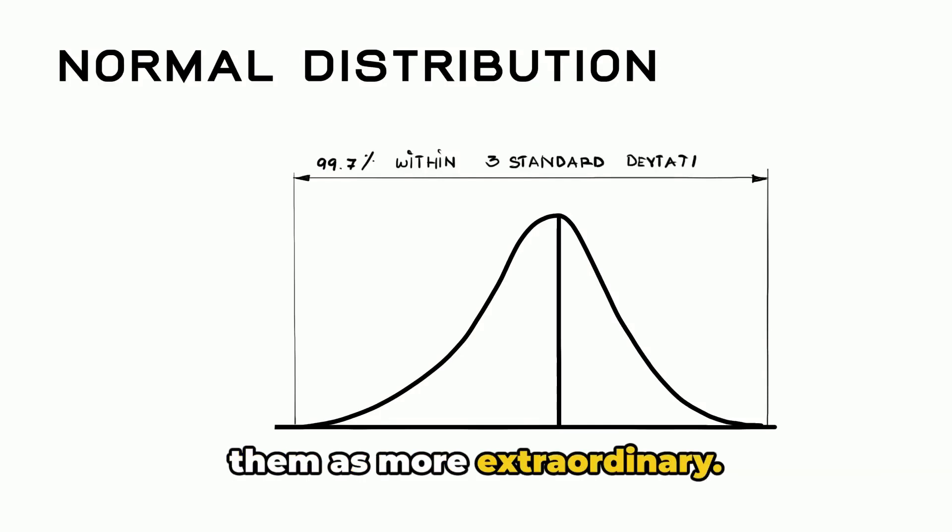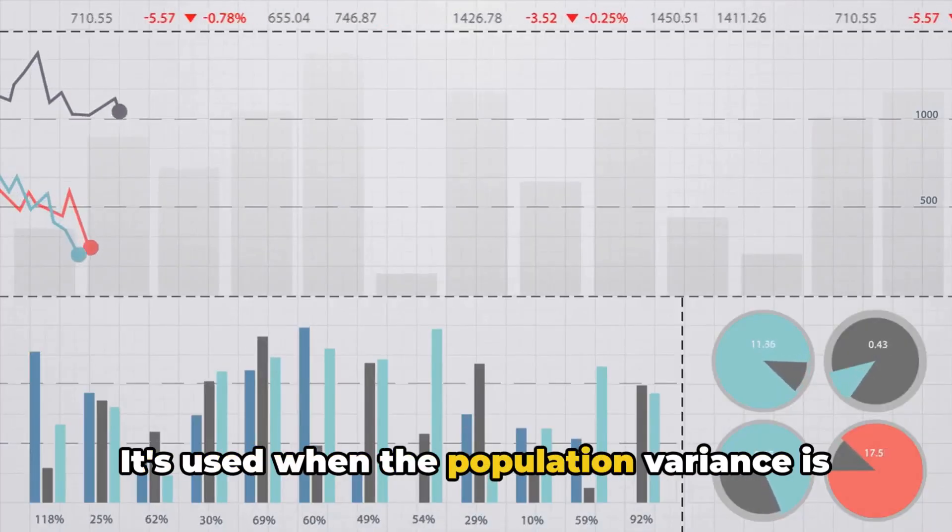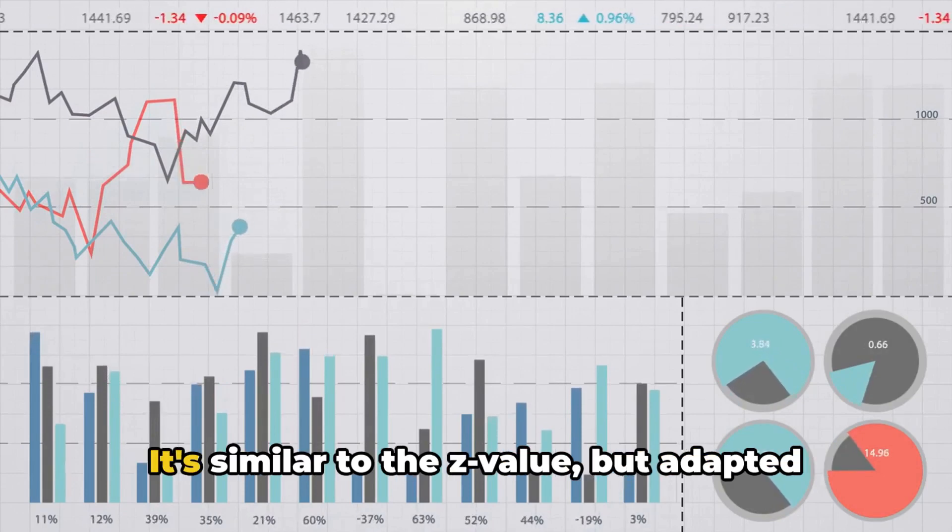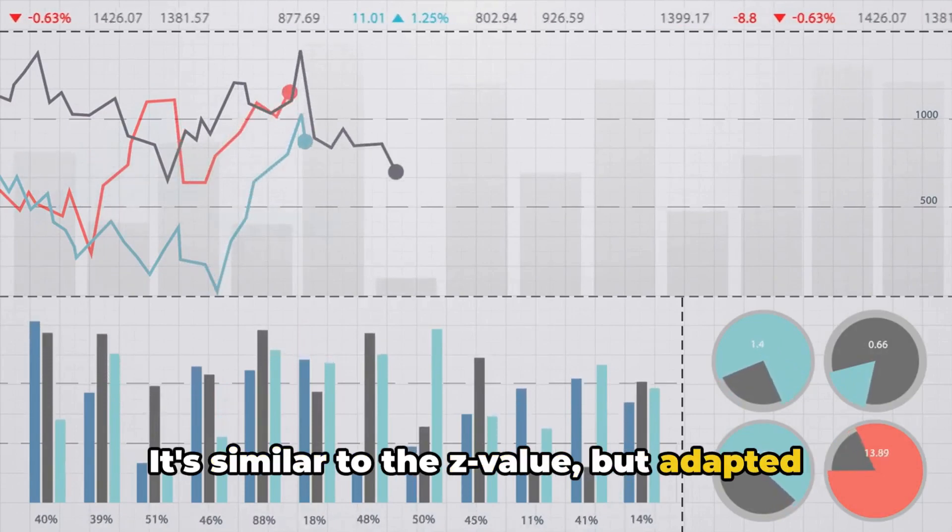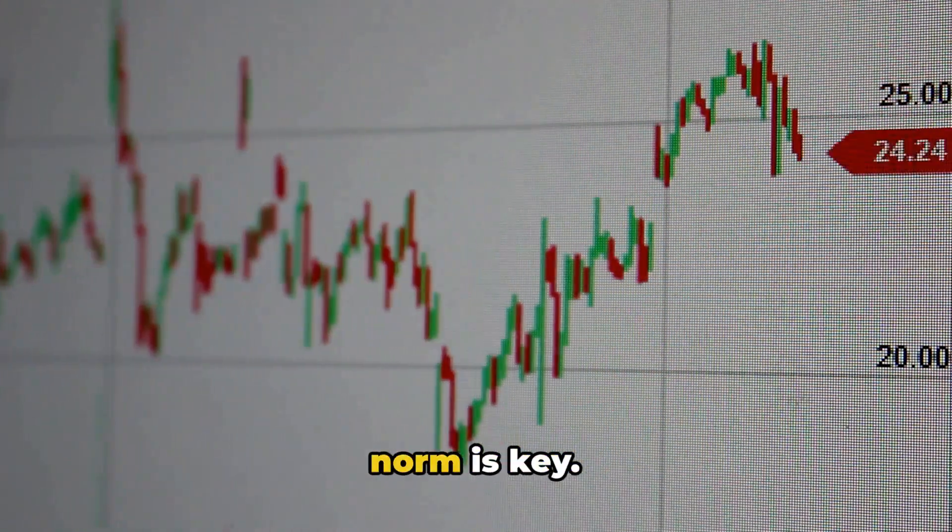To illustrate, let's consider a group of basketball players. We're measuring their heights and we want to know how tall or short a particular player is compared to the average. That's where our z-value steps in. It gives us an easy to understand number that reveals just how much a player's height deviates from the mean.